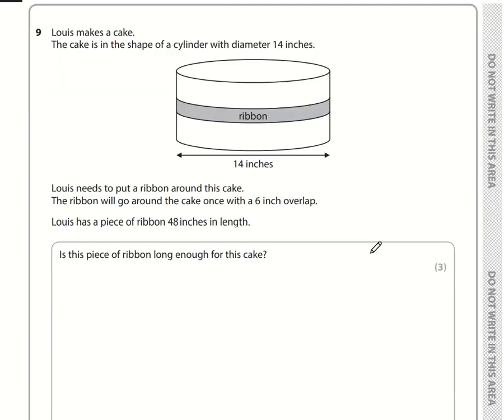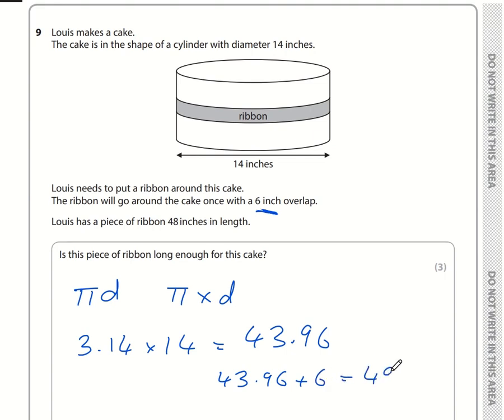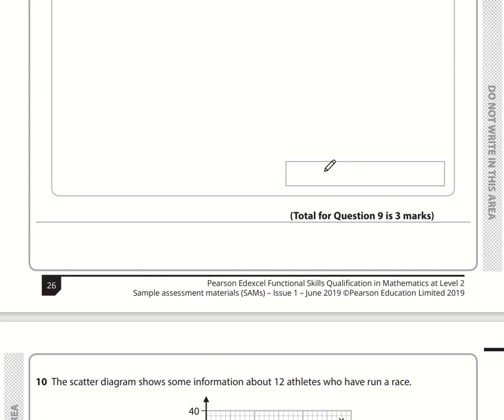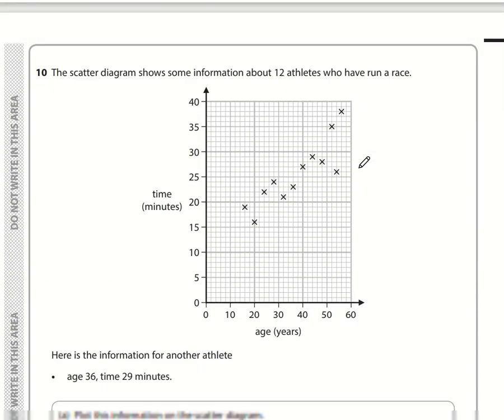Question 9. Louie is putting a ribbon around the cake, so around the circumference. The formula for circumference is pi D, pi times the diameter. Pi is 3.14 multiplied by the diameter 14, which is 43.96. We also want a 6 inch overlap. 43.96 plus 6 is 49.96. If Louie has 48 inches, is the ribbon long enough? The answer is no.